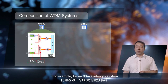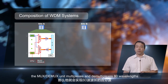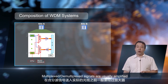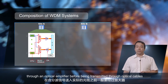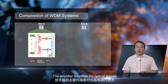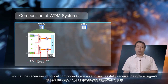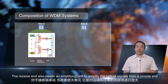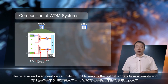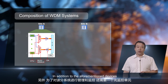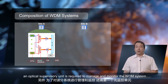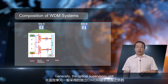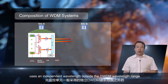For example, for an 80-wavelength system, the MUX-DEMUX unit multiplexes and demultiplexes 80 wavelengths. Multiplexed or demultiplexed signals are usually amplified through an optical amplifier before being transmitted through optical cables. The amplifier amplifies the optical signals so that the receive-end optical components are able to successfully receive them. The receive end also needs an amplifying unit to amplify the optical signals from a remote end. In addition, an optical supervisory unit is required to manage and monitor the WDM system.